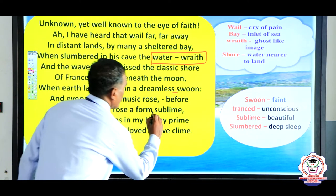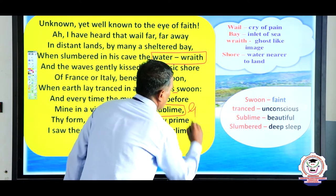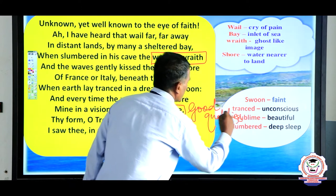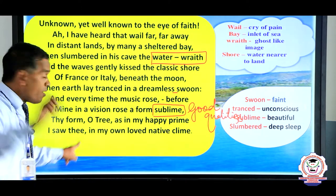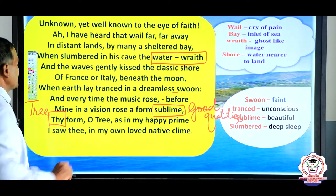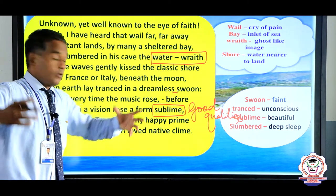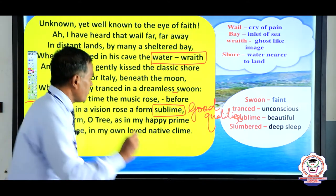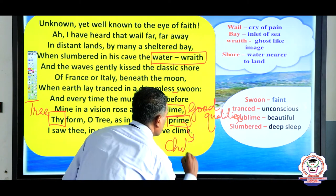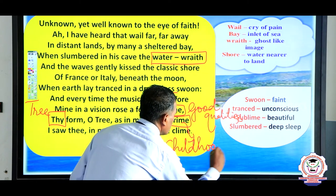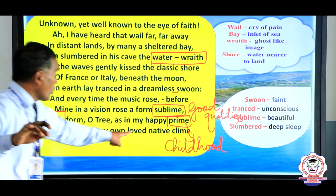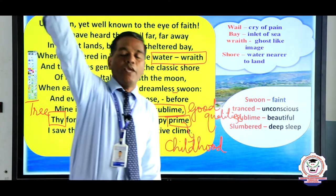'Sublime' means good qualities — beautiful, elevated. 'Thy form' — 'thy' refers to the tree, meaning 'your form, your size.' 'As in my happy prime' — the word 'prime' refers to childhood memories. 'I saw thee in my own loud native clime' — 'clime' refers to native place. When she was a child, she saw the tree in her own native place.